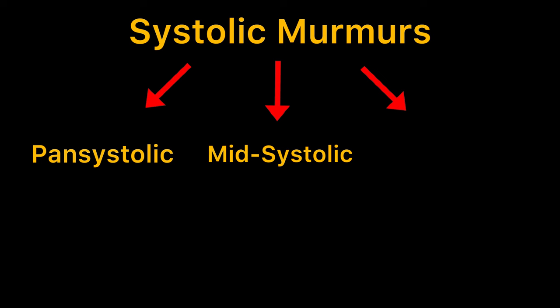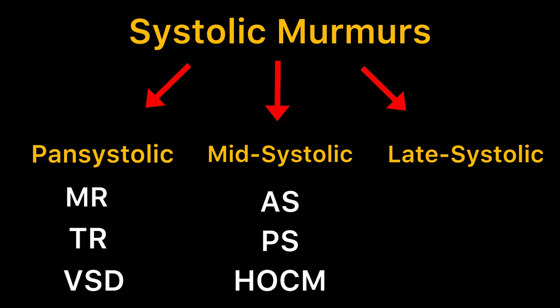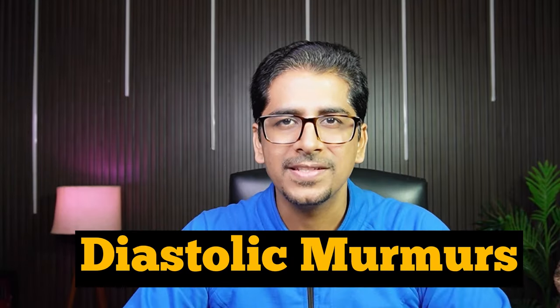To summarize systolic murmurs: pan-systolic includes mitral regurgitation, tricuspid regurgitation, and VSD; mid-systolic includes aortic stenosis, pulmonary stenosis, and HOCM; late systolic includes ASD and MVP. Now come the diastolic murmurs, which occur after S2. Listen to how a diastolic murmur sounds.